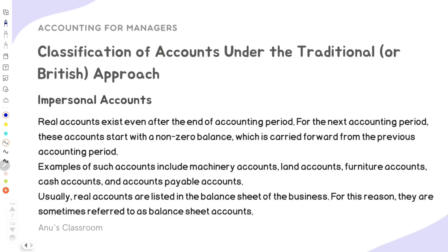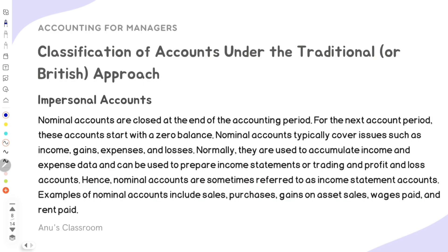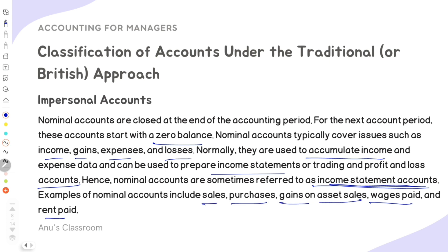Real accounts exist even after the end of the accounting period — that is, they start with a non-zero balance. Examples include machinery, land, furniture, cash, and accounts payable. They are listed in the balance sheet and are also referred to as balance sheet accounts. Nominal accounts are closed at the end of the accounting period and start with a zero balance in the next period. They cover income, gains, expenses, and losses, and are used to prepare the income statement or trading profit and loss accounts. Therefore, nominal accounts are also referred to as income statement accounts. Examples include wages paid, rent paid, purchases, gains, asset sales, and sales.